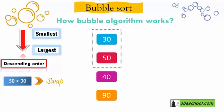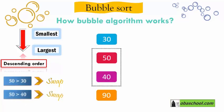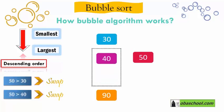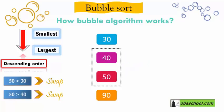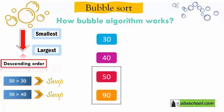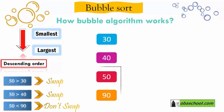Next, we compare 50 and 40. 50 is bigger than 40, so we swap — 40 goes up and 50 goes down. Now for the final two numbers: 50 and 90. 50 is smaller than 90, so we don't swap, because 50 is smaller and it is already above 90 — that is correct.